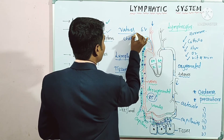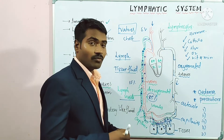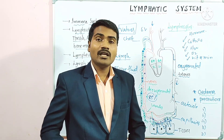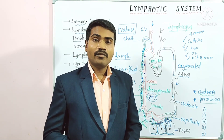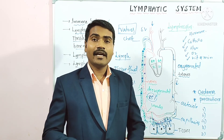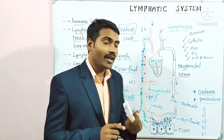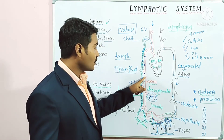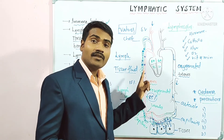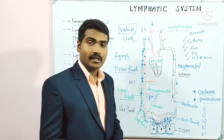Valves are present in lymph vessels. These are one-way valves — they allow fluid only in one direction and do not allow it to flow backward. Valves are present in lymph vessels as well as in veins, but they are absent in arteries.